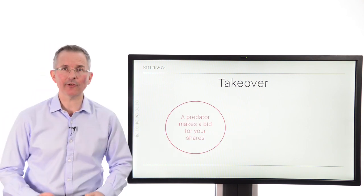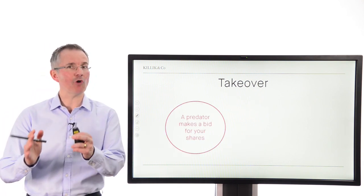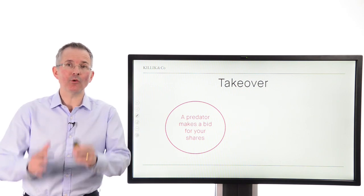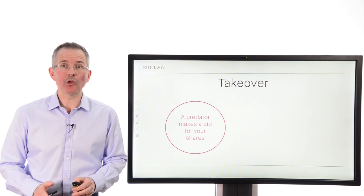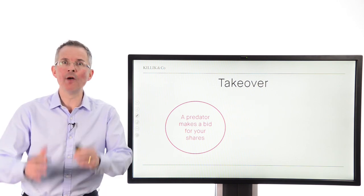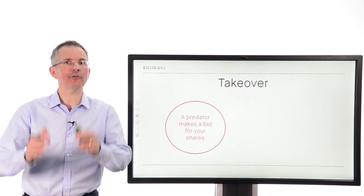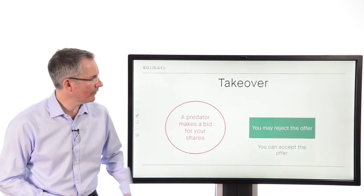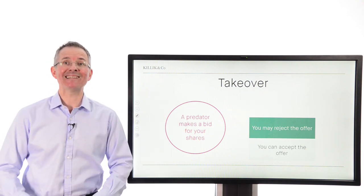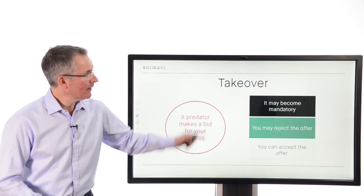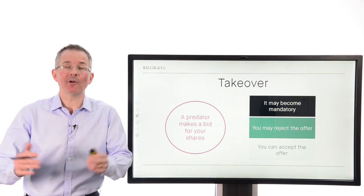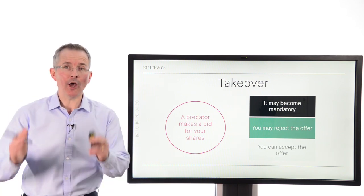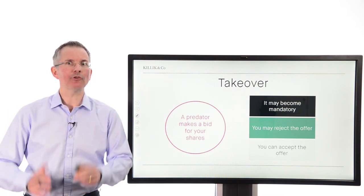Takeovers: a predator comes in and says they want the company. The way to gain control is to take control of its shares, so you might get an offer to buy your shares either for cash, or the predator might offer you shares in their business, or a mixture of the two. Your basic choices are to accept the offer or reject it — the predator might come back with a better one — but the offer might become mandatory if enough other shareholders say yes, and you could be effectively forced out at the original offer price.